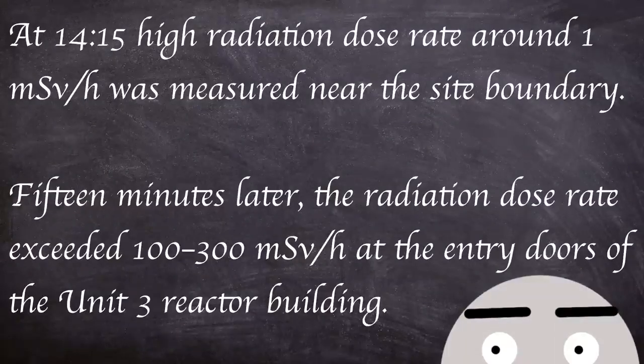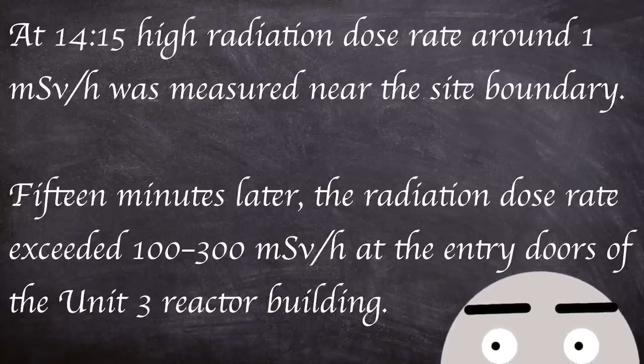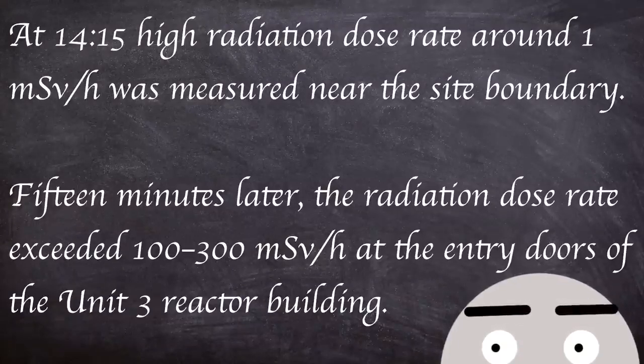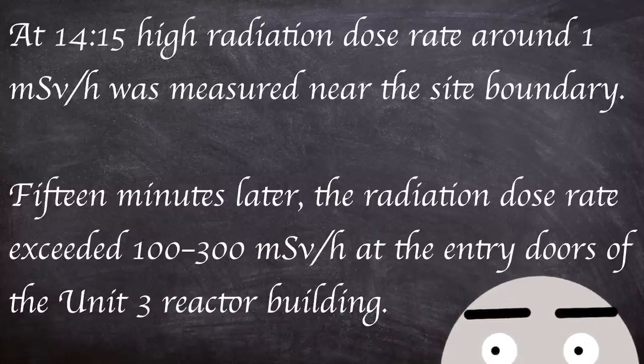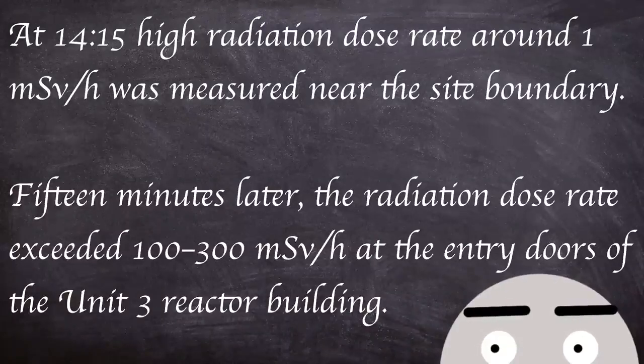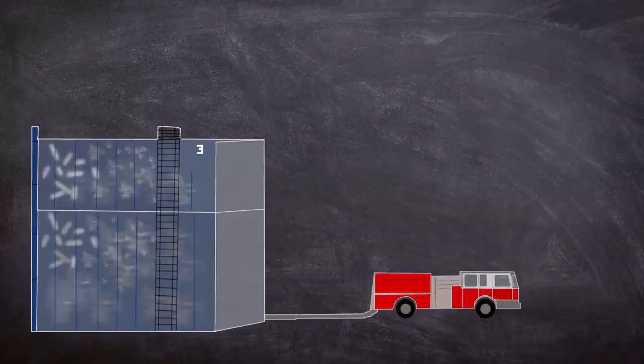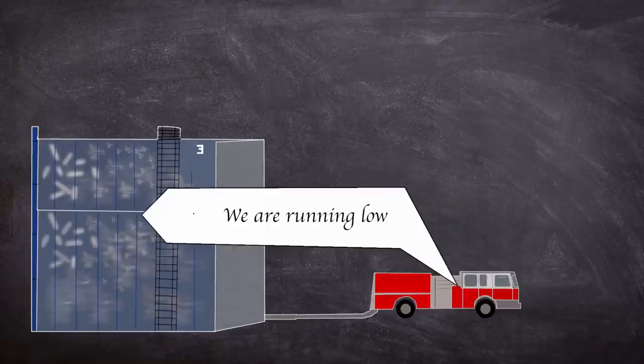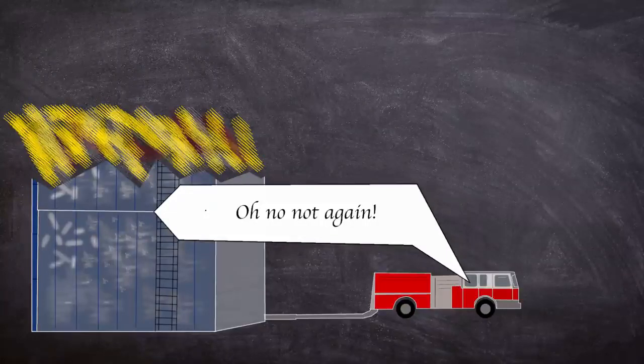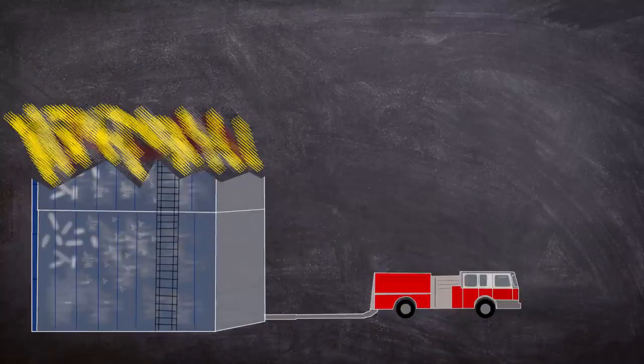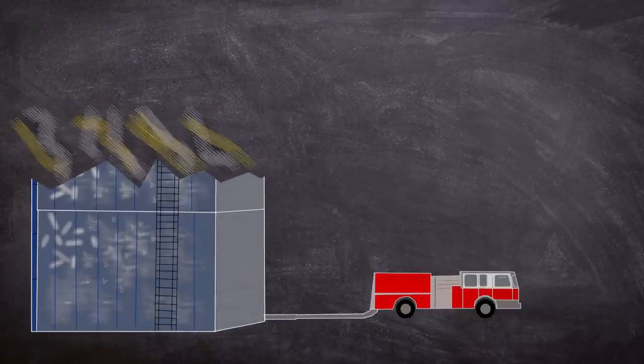Unit 3 had also gone for more than four hours without cooling. At 2:15 pm, high radiation dose rate of around 1 millisievert an hour was measured near the site boundary. Fifteen minutes later, the radiation dose rate exceeded 100 to 300 millisieverts an hour at the entry doors of the unit 3 reactor building. At 6:30 am on the 14th, the water level in unit 3 dropped as cooling water supplies being pumped began to dwindle. At 11:01 am, an explosion occurred in the upper part of the unit 3 reactor building similar to unit 1, destroying the structure above the service floor.